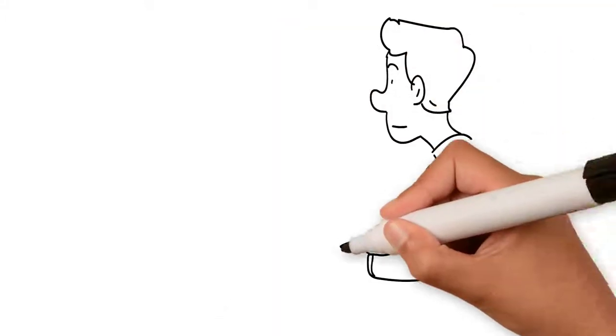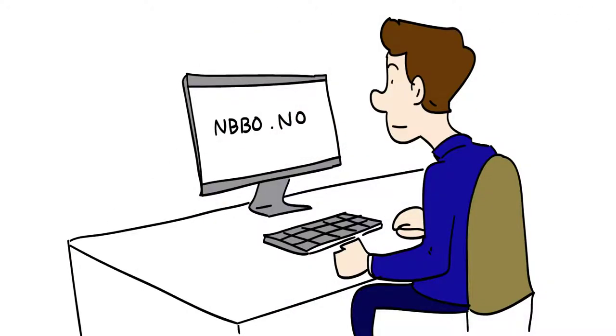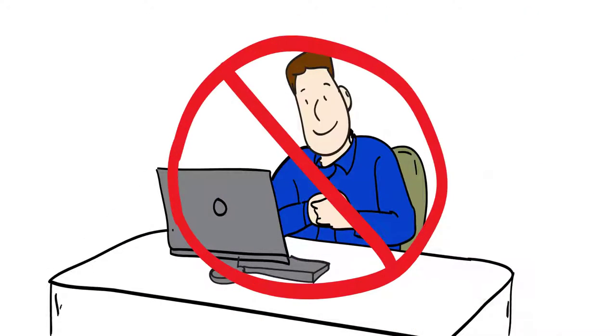Thomas knows that he has to keep an eye on nbbo.no if he's going to find properties with rights of first refusal. Monitoring what's going on elsewhere is no use.